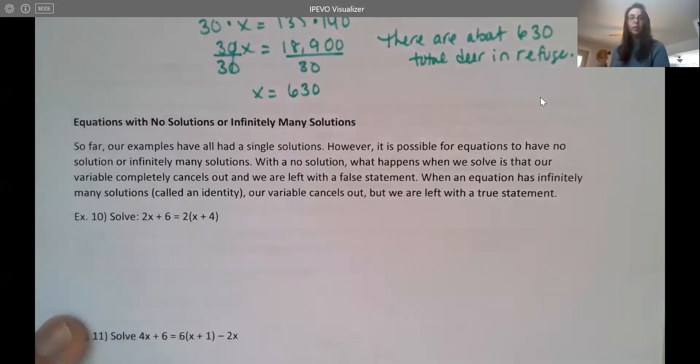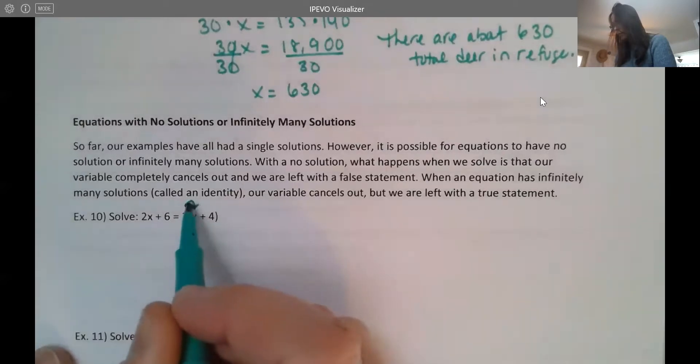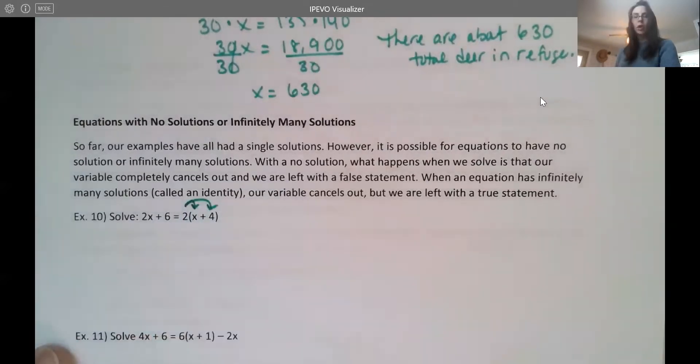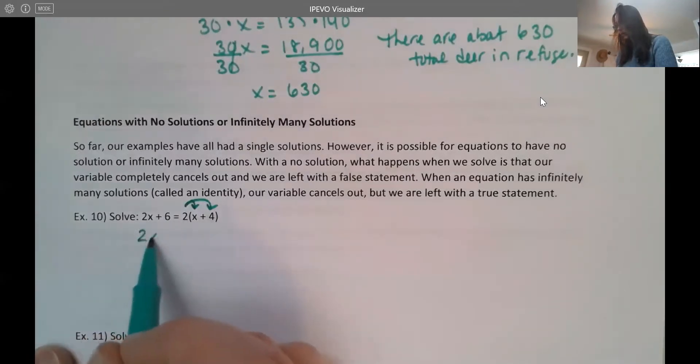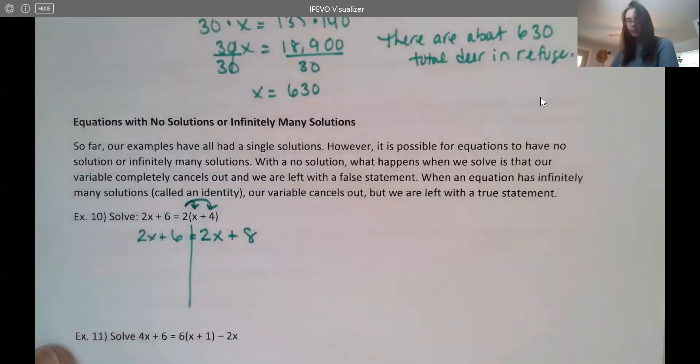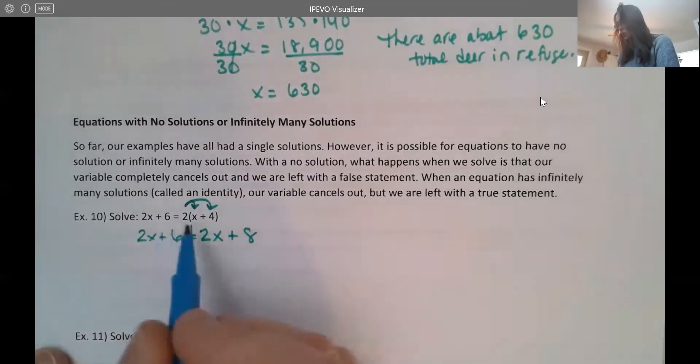So I have two examples here. I'm just going to start solving them. Now these ones are a little bit more obvious, I think. But a lot of times when we're solving equations, you're not going to recognize it right away. So I start on the right here by distributing, and I get 2x, and then 2 times 4 is 8, so plus 8.